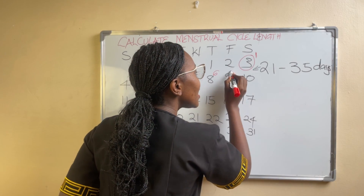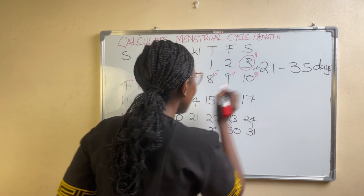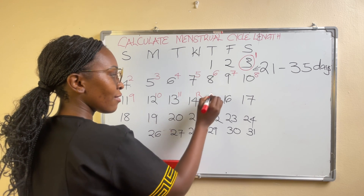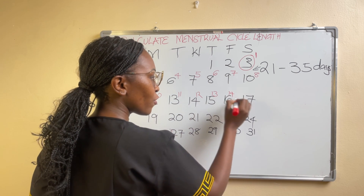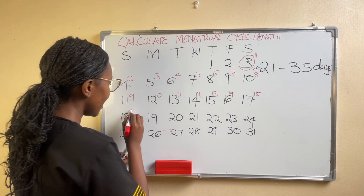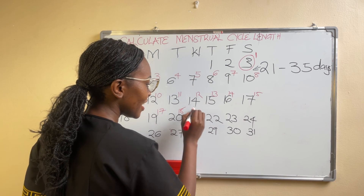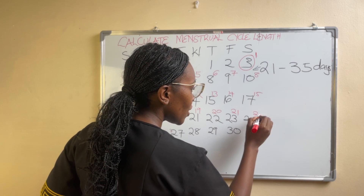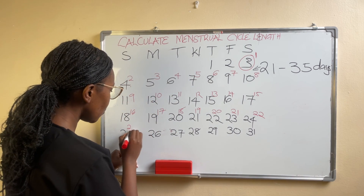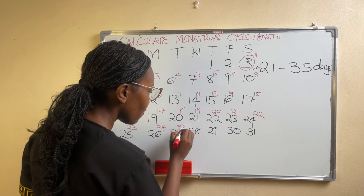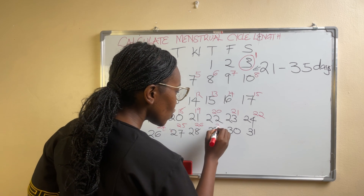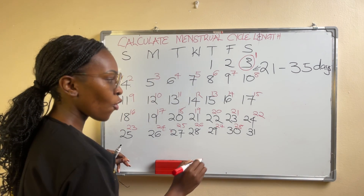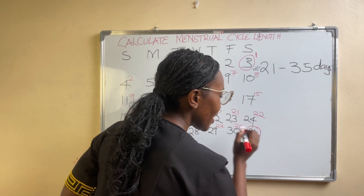Now let us continue counting. So this was day six, seven, eight, nine, ten, eleven, twelve, thirteen, fourteen, fifteen, sixteen, seventeen, eighteen, nineteen, twenty, twenty-one, twenty-two, twenty-three, twenty-four, twenty-five, twenty-six, twenty-seven, twenty-eight. Then she receives her next period here.